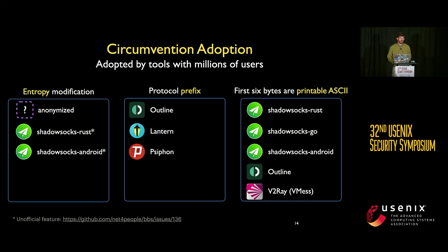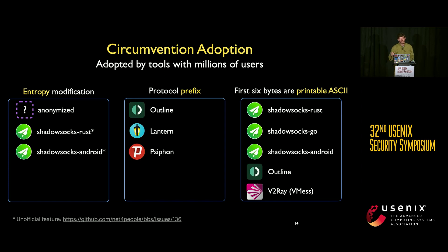Many circumvention tools have adopted these fixes. For entropy modification, we developed a version of the Shadowsocks library that has successfully used this method to bypass blocking. For prefix prepending, Outline, Lantern, and Siphon have started adding this to their products, and Shadowsocks, Outline, and V2Ray have started their connections with printable ASCII. These tools have millions of users globally, and some of these fixes were adopted as quickly as two weeks after the blocking began — and remain effective today.